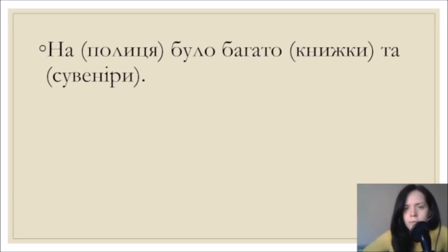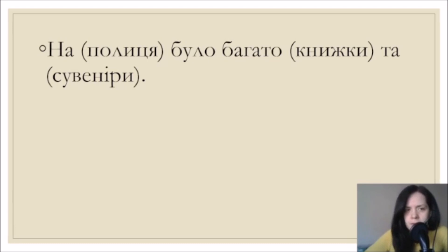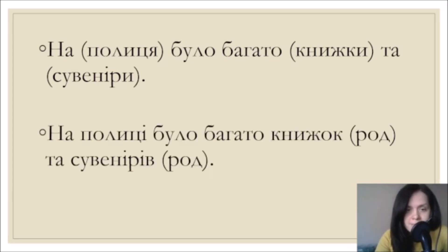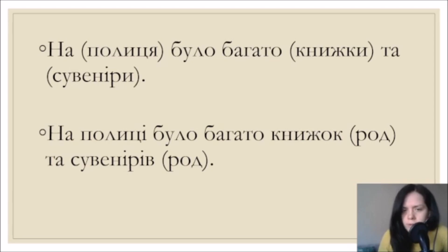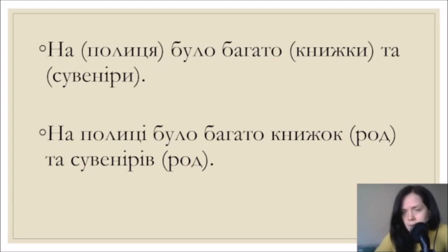На полиці було багато книжок та сувенірів - on the shelf there were many books and souvenirs. На полиці - on what? Locative case, where is the location. Було багато книжок - there were many books. Багато чого? Of books - genitive. Та сувенірів - and of souvenirs, also genitive. Both nouns книжок and сувенірів go in genitive case.